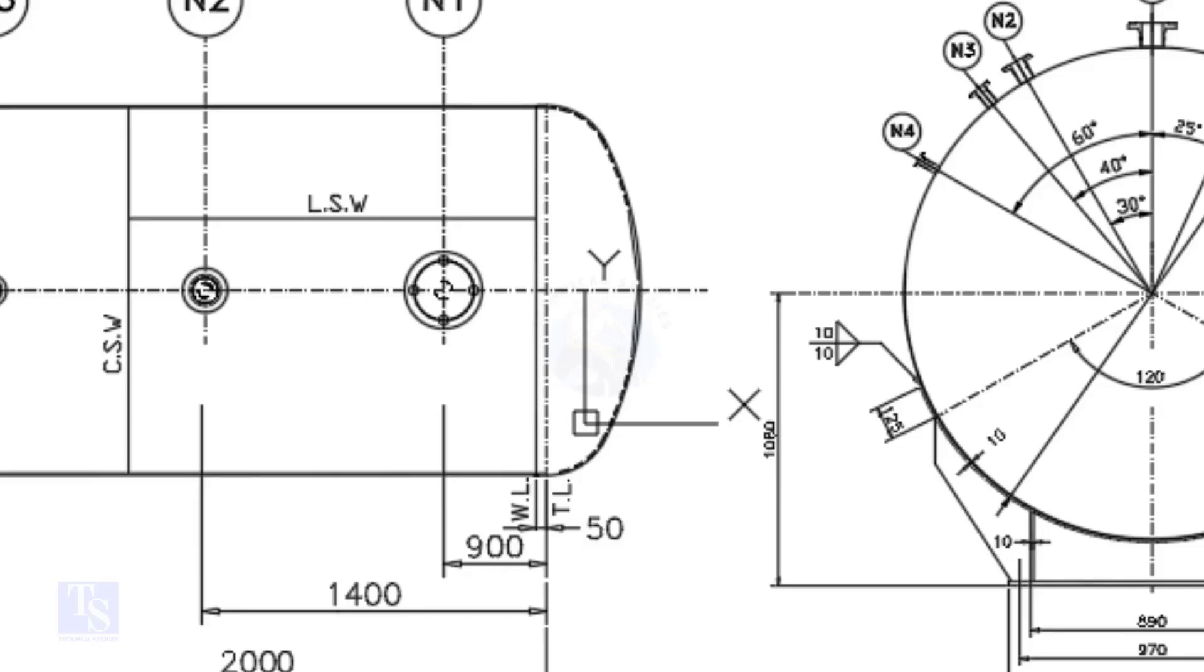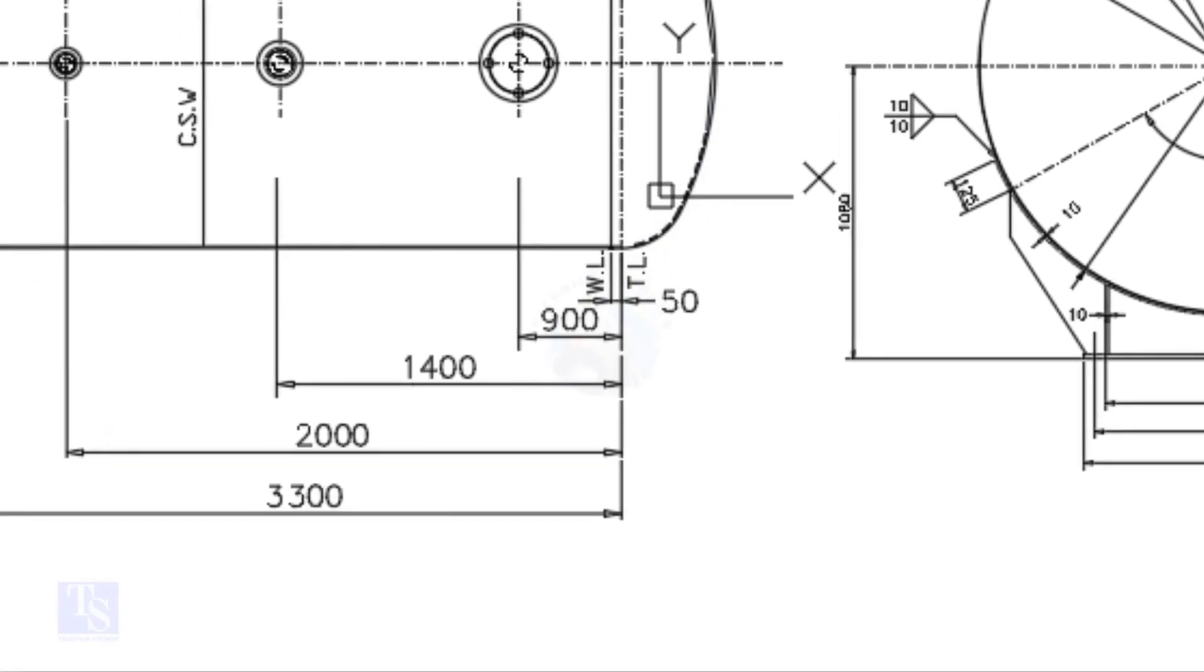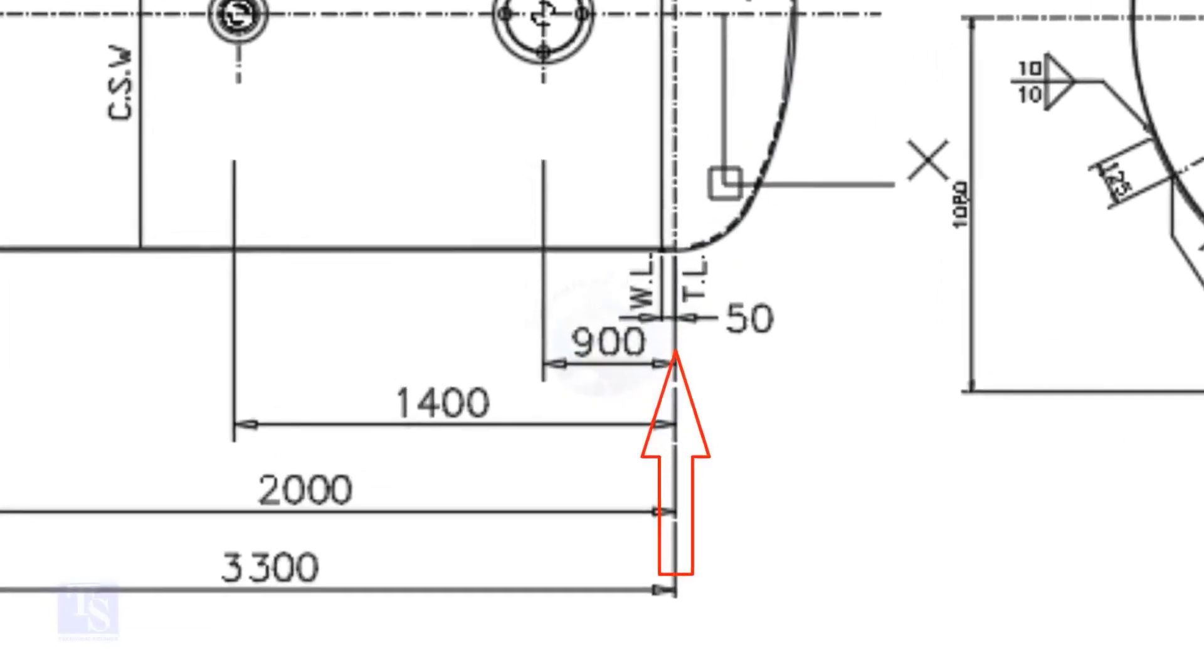Here, the straight face is 50 mm. In this drawing, the nozzle center distance is measured from the TL. But in some drawings, you may see the nozzle center given from the WL. So, before starting the marking, always check these details carefully.